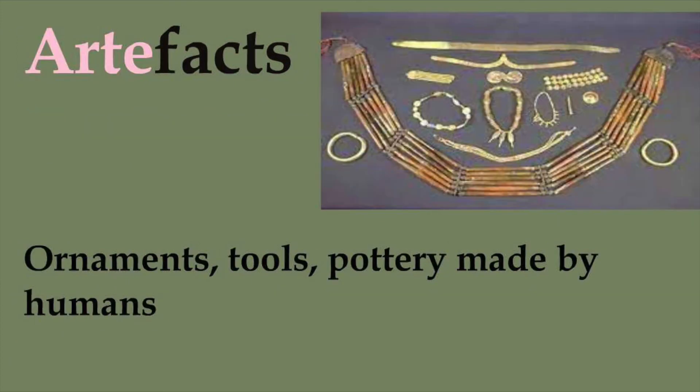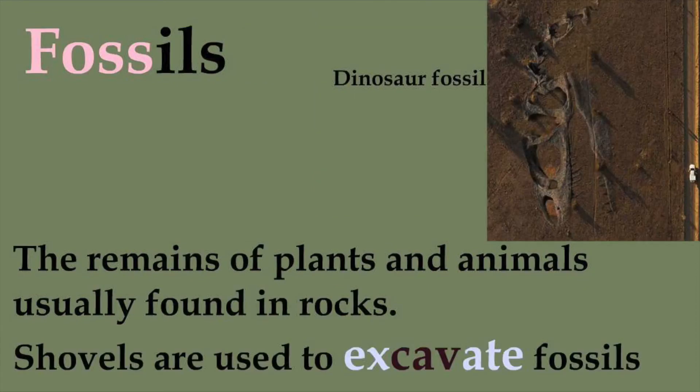Artifacts like ornaments, tools, and pottery made by humans are another method to find out about the past. Fossils are the remains of plants and animals usually found in rocks. Shovels and other tools are used to excavate fossils. The dinosaur fossil is a well-known example.